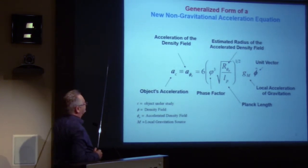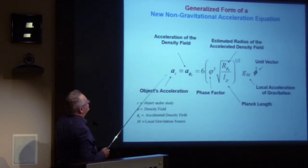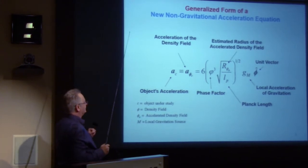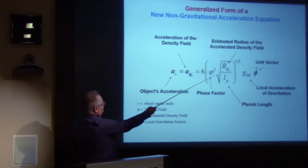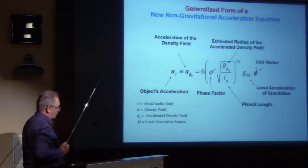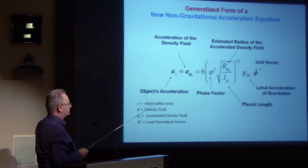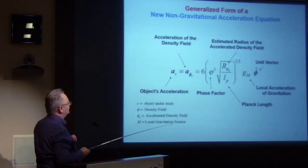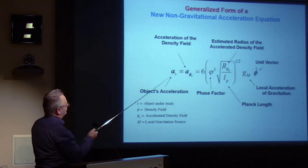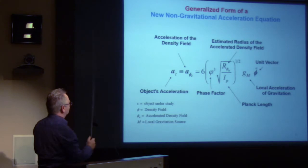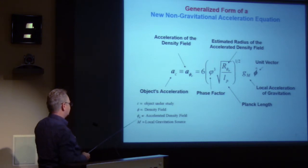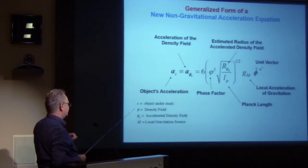I'll tell you what a density field is here in a few minutes, but this is basically the acceleration of that density field. The density field is really a field around a mass and the mass itself. There's an equation for the estimated radius of that density field. It has a phase factor, the Planck length, the acceleration of local gravity, and the number six in it. C refers to the object you're looking at accelerating, the subscript refers to the density field, A means the density field is accelerated, and M is just the local gravity source.